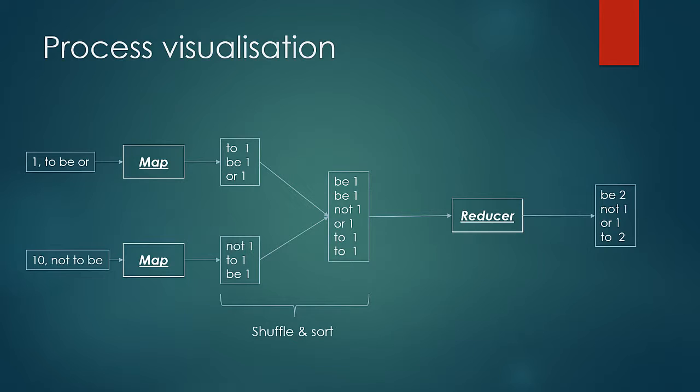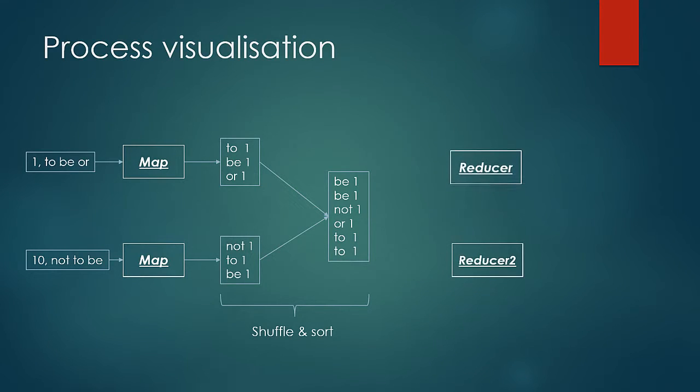The power of parallelism can and should be harnessed at reduce phase as well. Let us take a look at a case with two reducers. In this case the reducer input would be partitioned keeping two things in mind. First, that the values of all the keys go to the same reducer. Second, distribution is almost equal. So now the reducers would produce the result as shown.